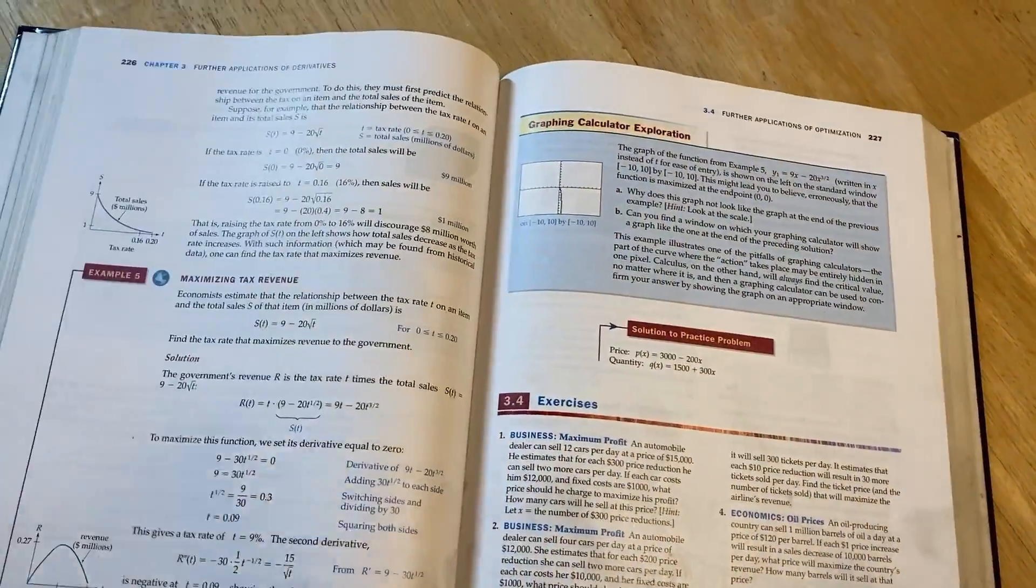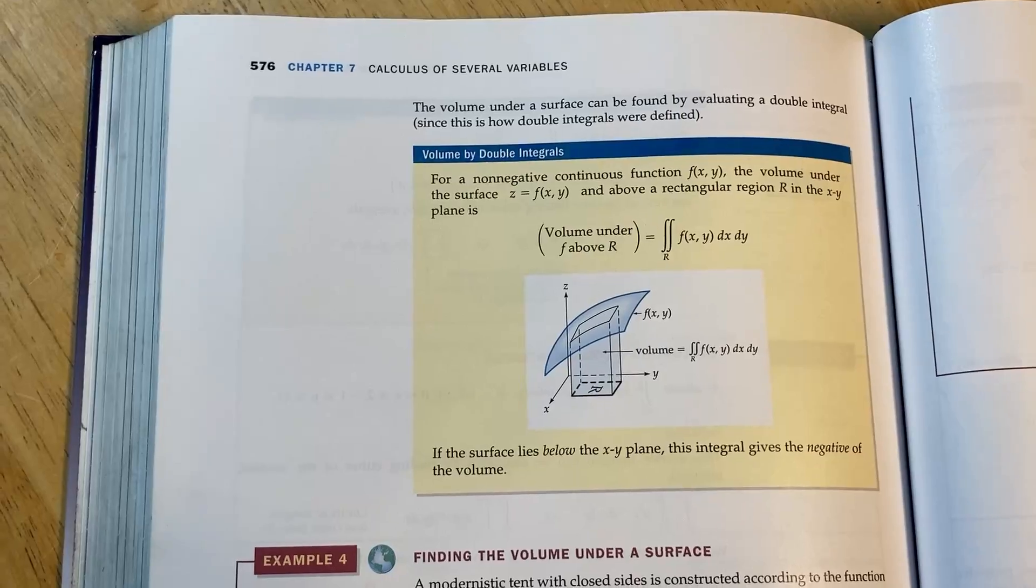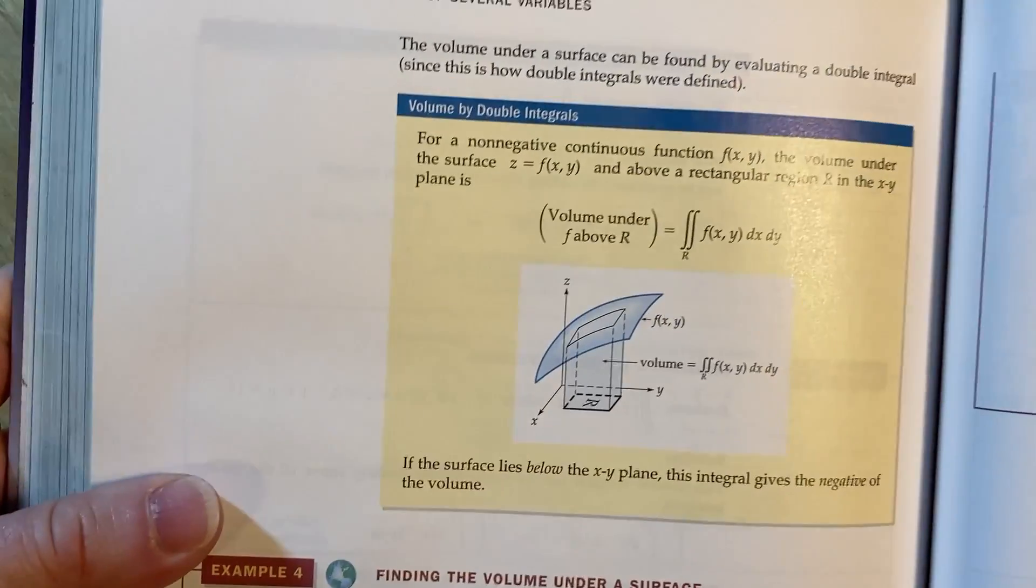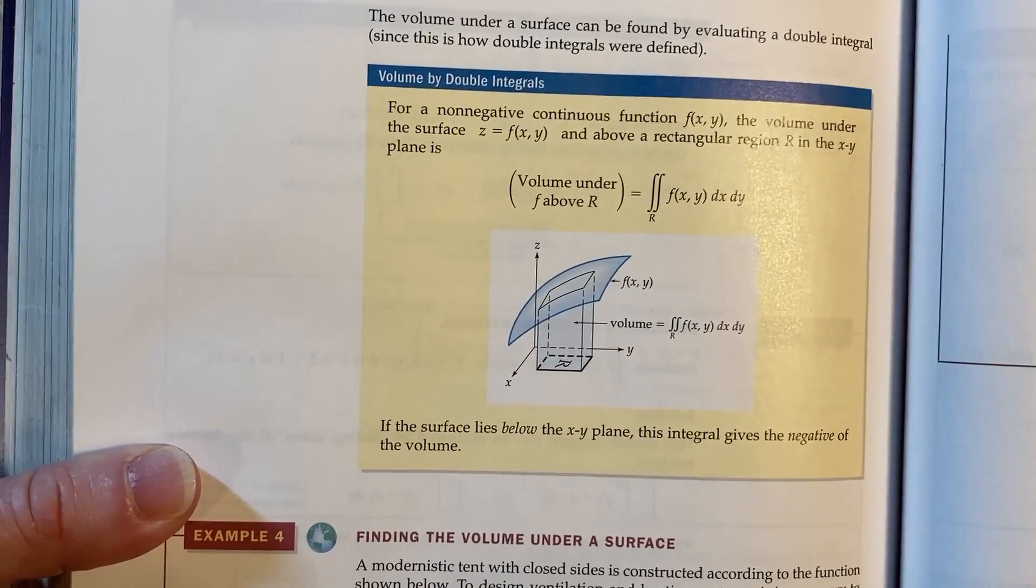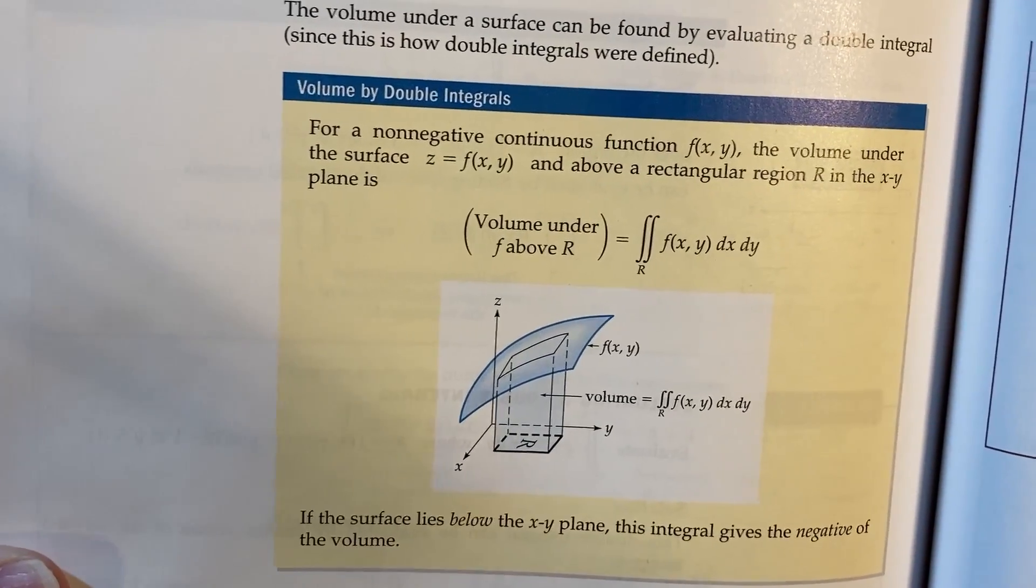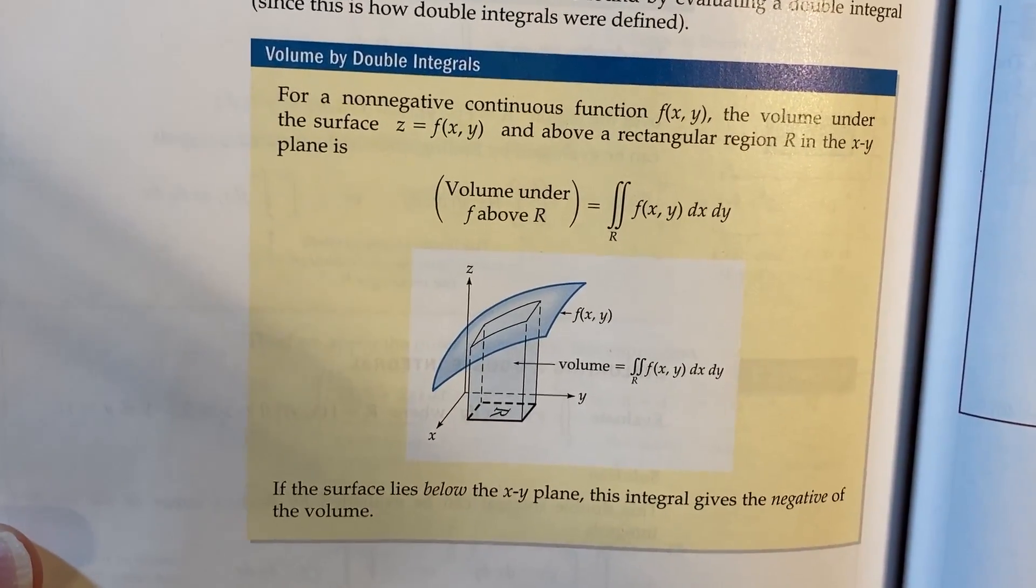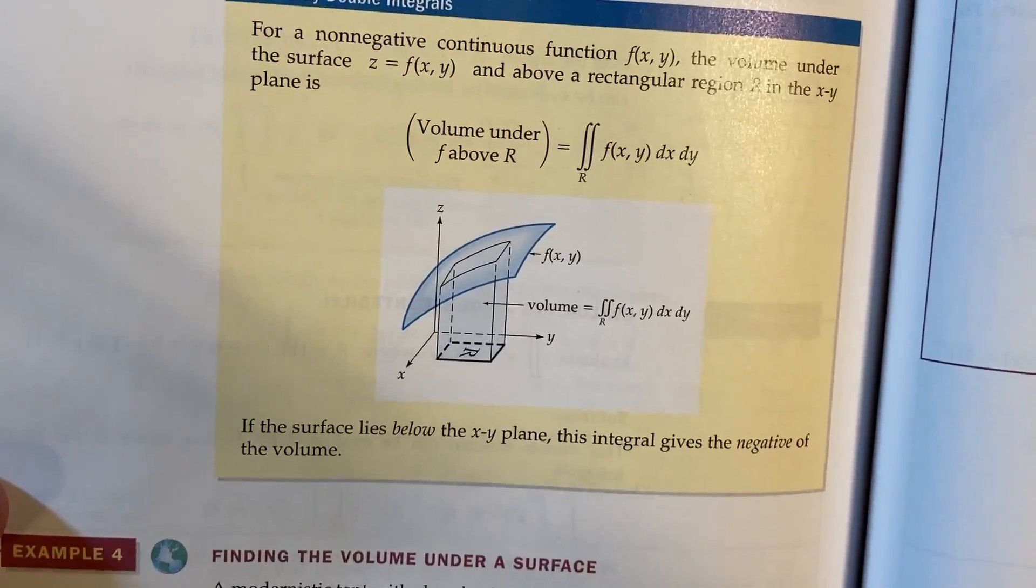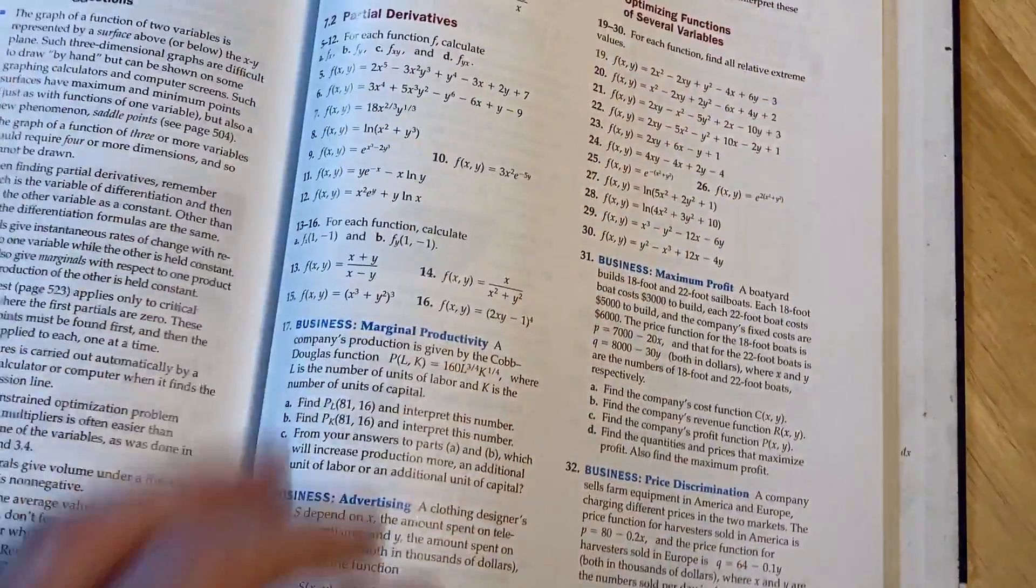Here's some of the multivariable calculus stuff. So again if you want to learn some multivariable calc you can actually learn it with just basic algebra with a book like this. Volume by double integrals. Really good pictures too. Really good explanations. Look at that. Just super clean, super super clean. I'm getting goosebumps.